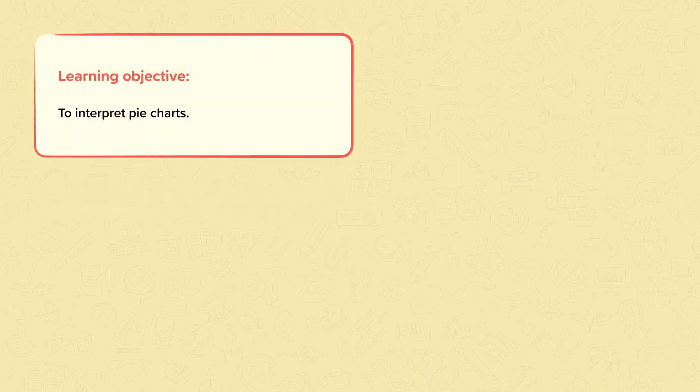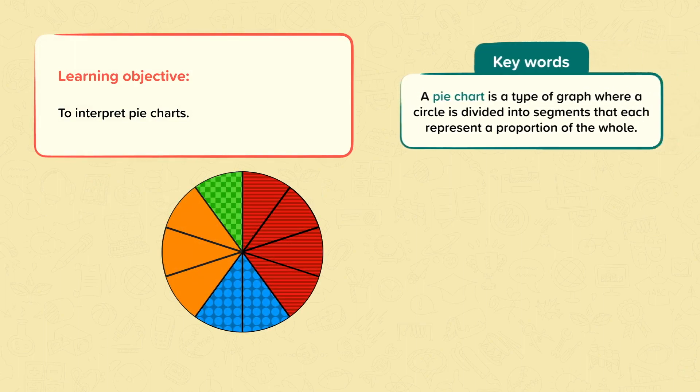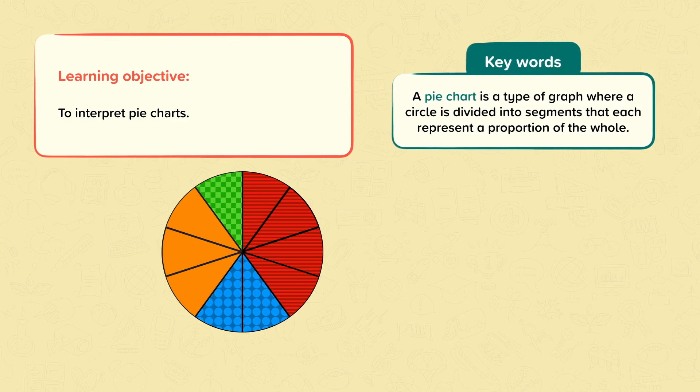Pie Charts. In this nugget, the learning objective is to interpret pie charts. A pie chart is a type of graph where a circle is divided into segments that each represent a proportion of the whole. They are called pie charts because they look like pies and each of the segments is like a slice of pie.